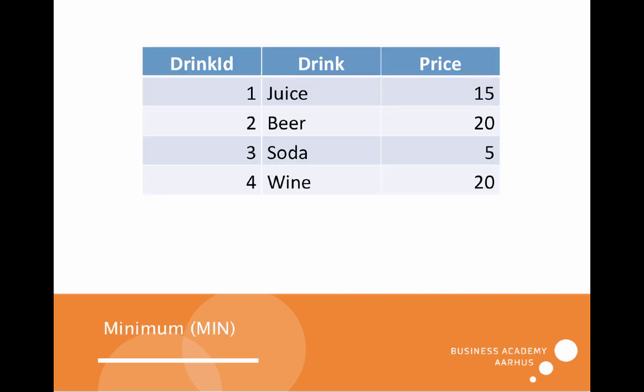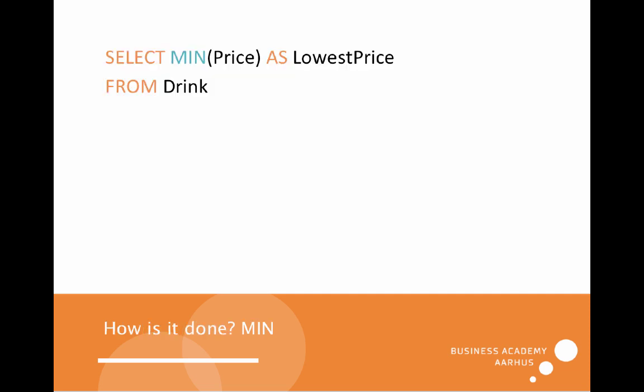When we want to find the minimum price — in this case it will be soda — we use the MIN function on the price, and we output it as a column name called 'lowest price'.